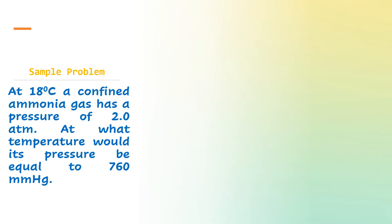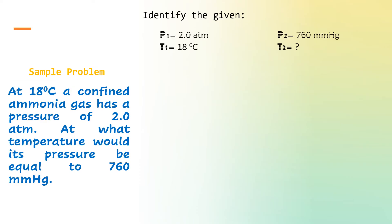Learners, you may try our second sample problem. You may pause the video after I read the problem. At 18 degrees Celsius, a confined ammonia gas has a pressure of 2 atmosphere. At what temperature would its pressure be equal to 760 millimeters of mercury? Again, let us first identify the given. Initial pressure is 2 atmosphere. Initial temperature is 18 degrees Celsius. The final pressure is 760 millimeters of mercury. The unknown is the final temperature.